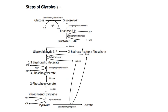At first, glucose produces glucose-6-phosphate in the presence of hexokinase or glucokinase and magnesium ion, and here ATP is converted to ADP. In the next step, glucose-6-phosphate produces fructose-6-phosphate in the presence of phosphoglucoisomerase.